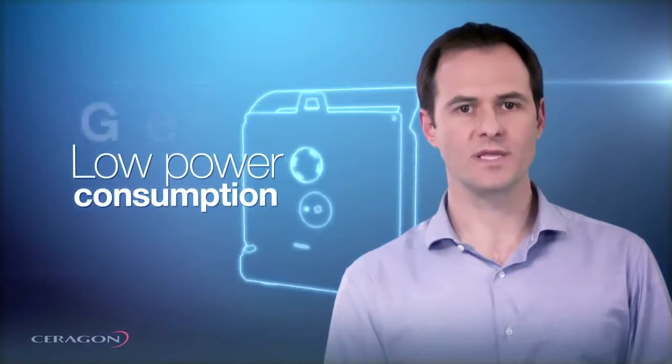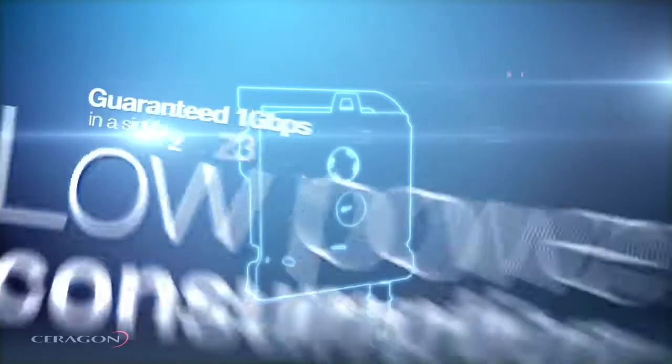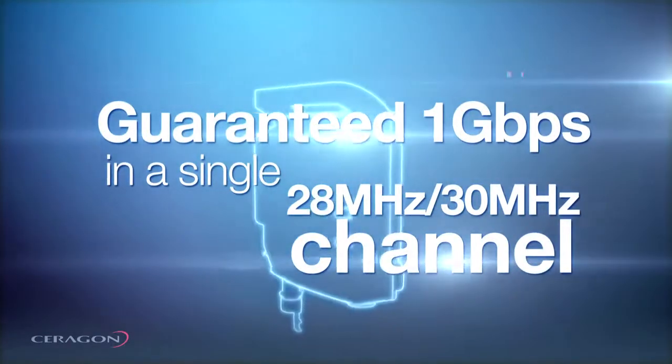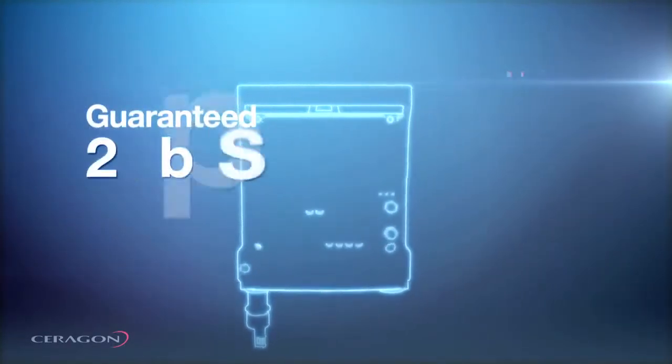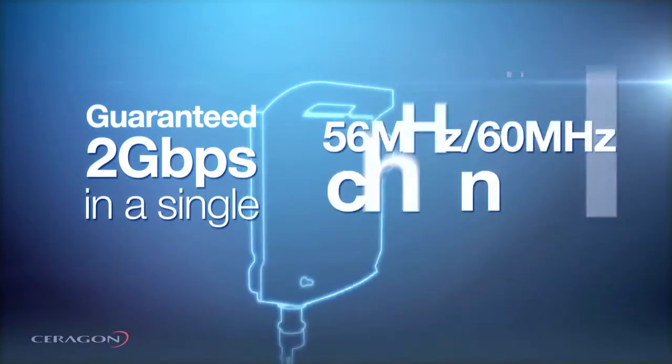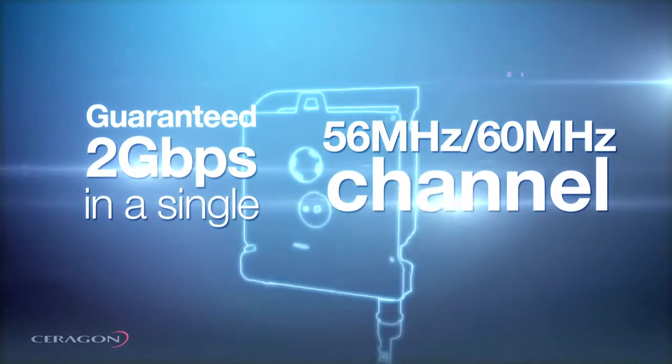Using the system, we can allow for a guaranteed 1 Gbps in a single 28 or 30 MHz channel or a guaranteed 2 Gbps radio throughput in a single 56 or 60 MHz channel.